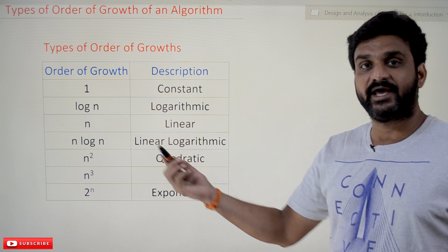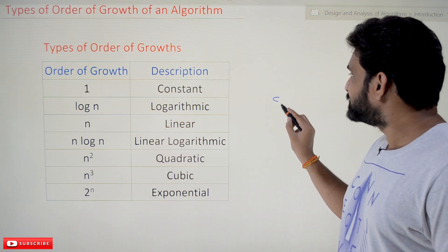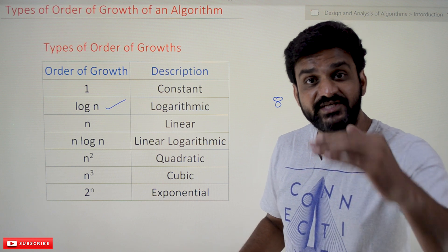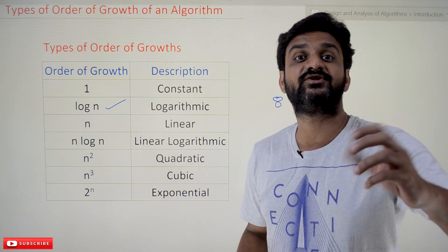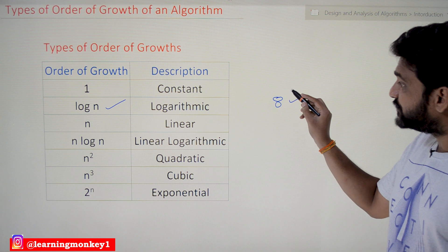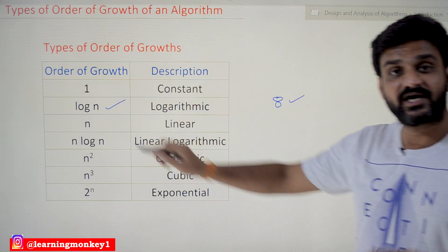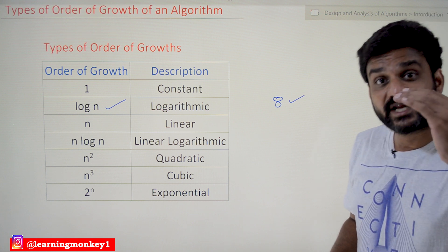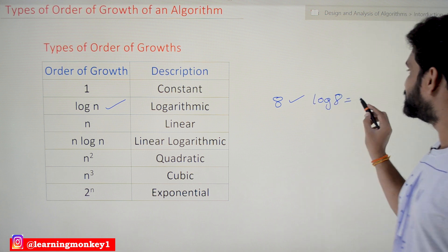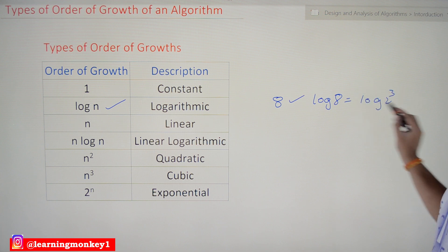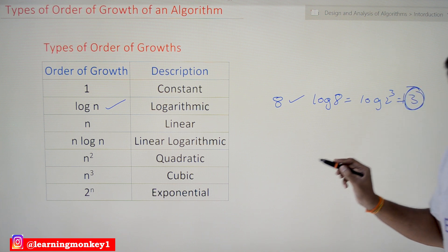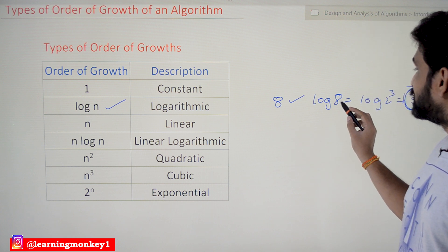The next one is logarithmic growth — log n. For example, if the input of the algorithm is 8, efficiency means the number of steps getting executed to get the output. If you give 8 inputs to an algorithm whose efficiency is log n, the number of steps executed is log 8, which is log of 2 to the power 3, so three steps will get executed.